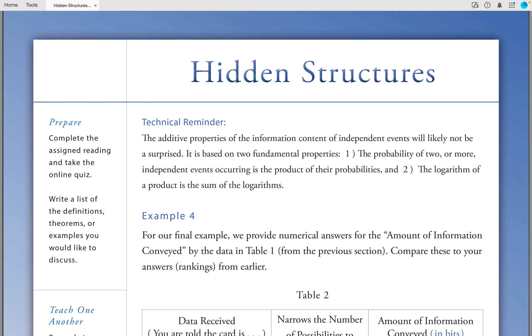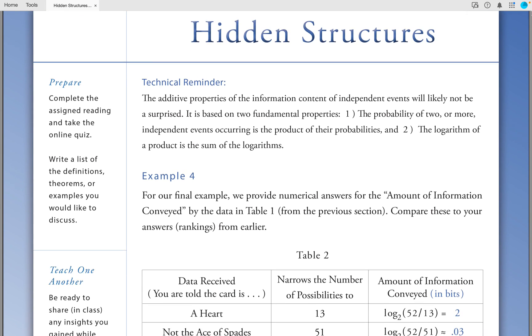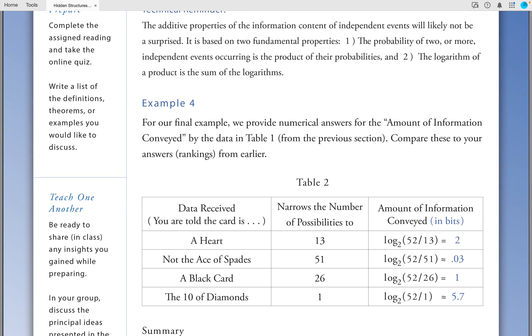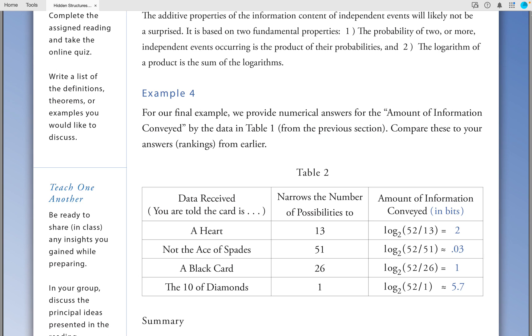Example 4: For our final example, we provide numerical answers for the amount of information conveyed by data in Table 1 from the previous section. Compare these to your answers from earlier.